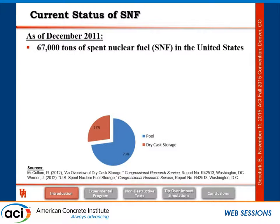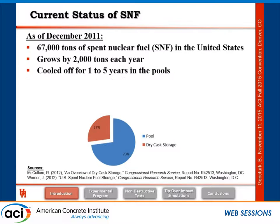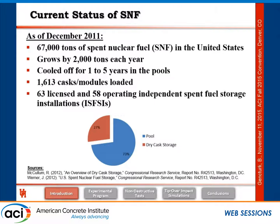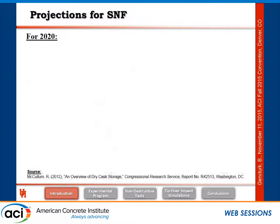As of 2011, there were 67,000 tons of spent nuclear fuel in the United States. 73% is stored in pools and the remaining 27% is in dry storage. This number grows by 2,000 tons each year. They are cooled for one to five years in the pools before transfer to casks. As of 2011, there are over 1,600 casks loaded with spent nuclear fuel, 58 operating dry cask storage sites, and 63 licensed sites. The number will obviously increase in the future.